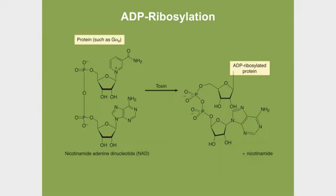Now, what's NAD made up of? This is sometimes why a structure is useful — not for boards, but for understanding. What NAD is made up of: at the top of the molecule, that is the vitamin niacin. Now look at the bottom of the molecule. The bottom of the molecule is the purine adenine, plus ribose, and two phosphates — that's ADP at the bottom of the molecule.